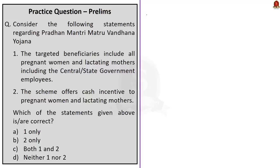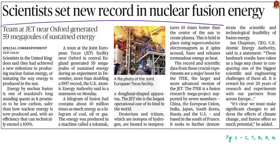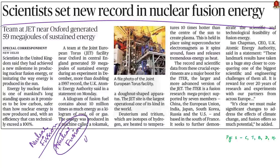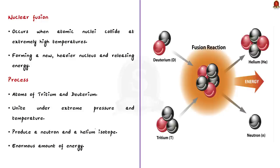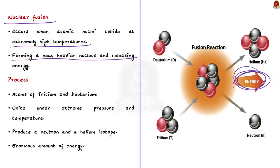This article talks about the nuclear fusion process and efforts to replicate the process occurring in the sun. We have been generating electricity through nuclear fission; nuclear fusion is an alternative. Nuclear fusion occurs when atomic nuclei collide at extremely high temperatures, forming a new heavier nucleus and releasing energy in the process.